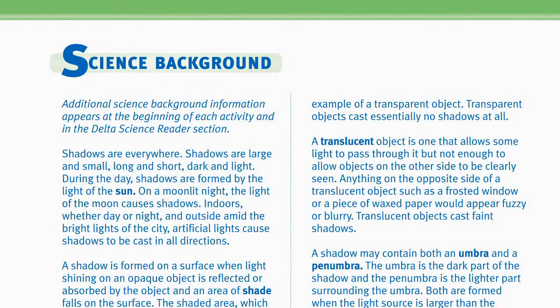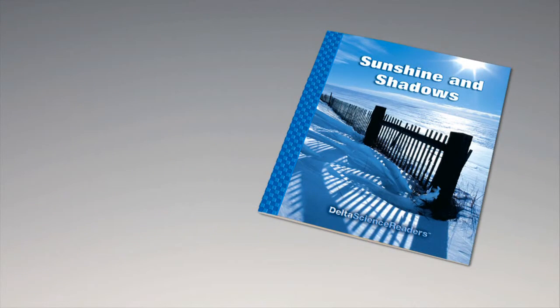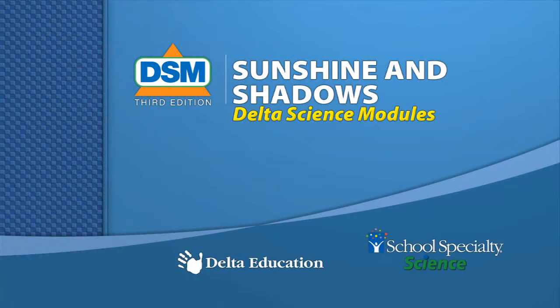To conclude session two, remove the ring from the window and return the chalk, masking tape, and foam ring to the kit. For science background, reinforcement activities, curriculum connections, and information about the delta science reader, please consult your DSM teacher's guide. Thank you.